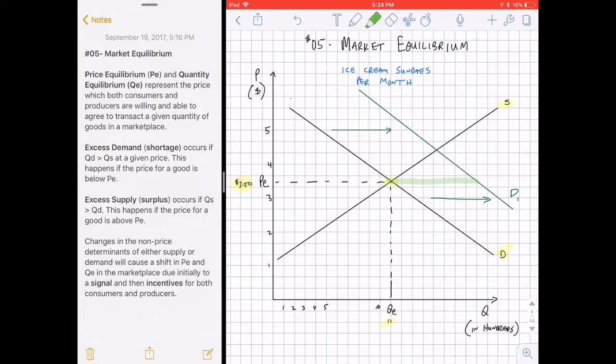If nothing else changes except for this shift in demand, I want you to see what would happen at this value. If we kept the original equilibrium price of $3.50, there is now an excess demand because the whole demand curve shifted out. There's an excess demand because now 1,900 individuals are going to demand that good, because the original price would intersect the demand curve at this point where only 1,100 producers were supplying that good. If nothing else changes except this signal in the marketplace, there is going to be a huge shortage of ice cream sundaes being sold. There's only 1,100 available in the marketplace.